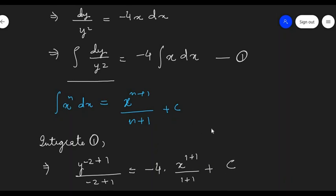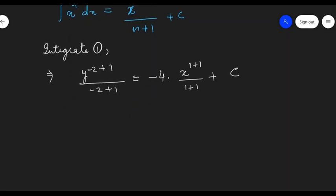Now, we can just simplify the powers and proceed further. So, we are going to get y^(-1)/(-1) = -4 · x^2/2 + C.